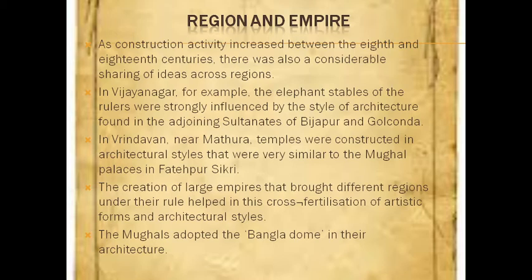As construction activity increased between the 14th and 18th centuries, there was considerable sharing of ideas across regions. In Vijayanagara, for example, the elephant stables of the rulers were strongly influenced by the style of architecture found in the adjoining Sultanates of Bijapur and Golconda.